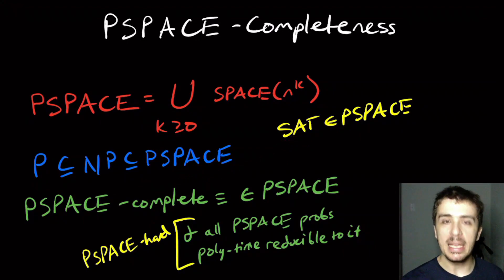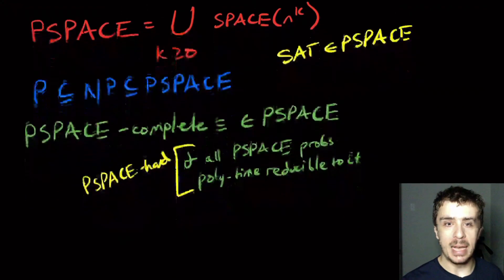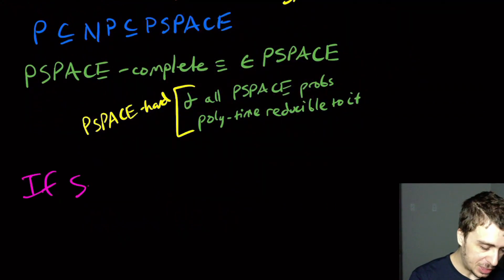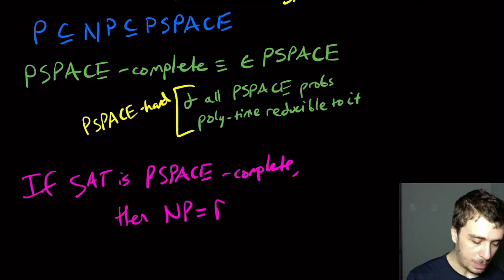For example, if we happen to show that SAT is PSPACE-complete, then we can show that NP is equal to PSPACE. So if SAT is PSPACE-complete, then NP equals PSPACE.